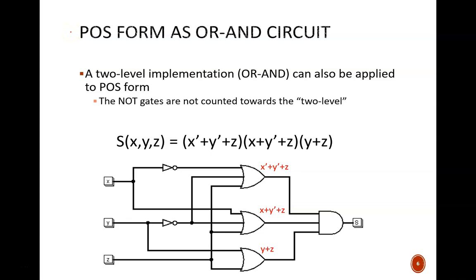The other standard equation form, product of sums, also has a standard two-level implementation. That term two-level is a little confusing because we are using three types of gates: NOT, OR, and AND. However, the NOT gates are not counted as one of the levels. The most common two-level implementations are AND-OR for SOP and OR-AND for POS. We'll briefly discuss others in a later video.